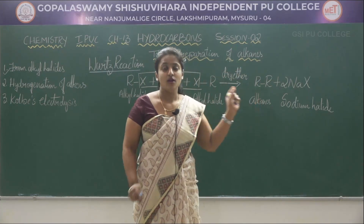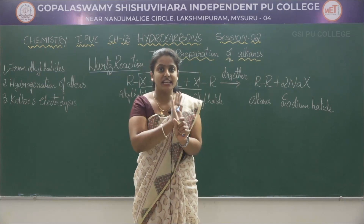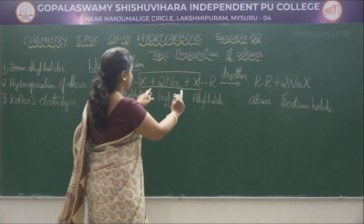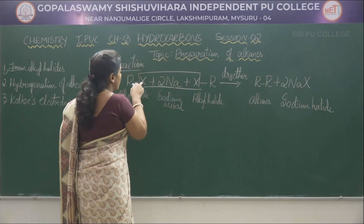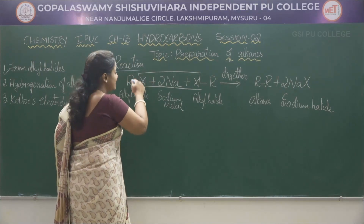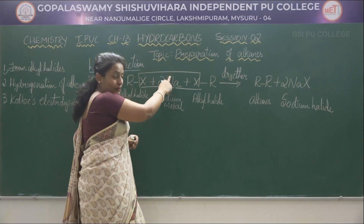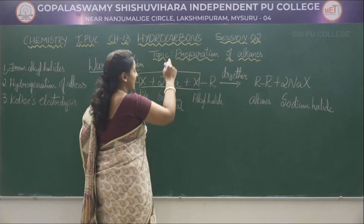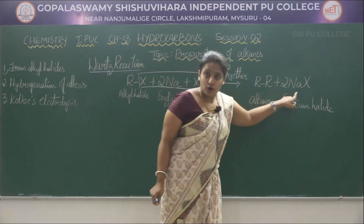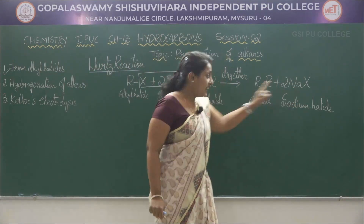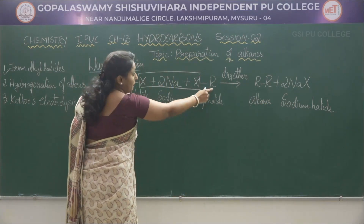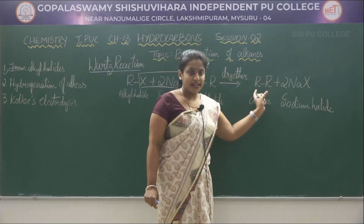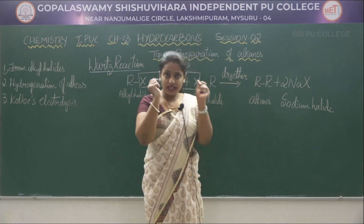This is the general reaction. One alkyl halide's halide group reacts with one sodium metal; similarly, the other alkyl halide's halide group reacts with the other sodium metal to give sodium halide as the byproduct. These two R groups combine to give the higher alkanes.